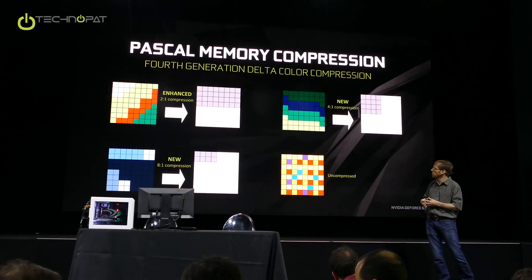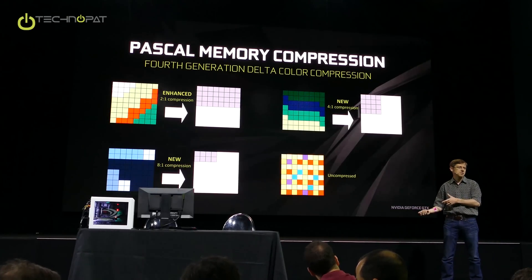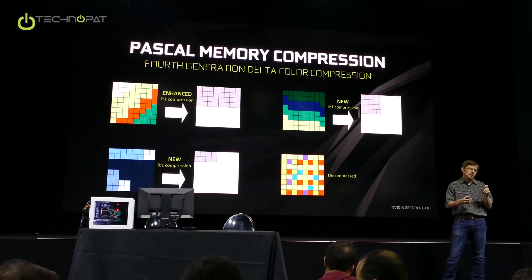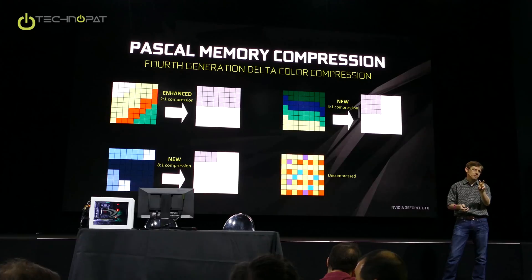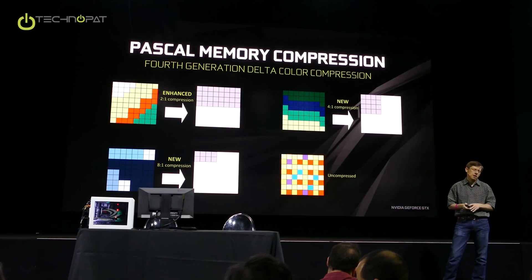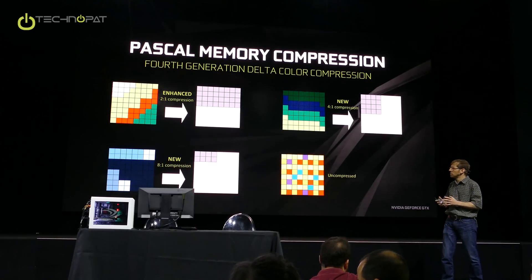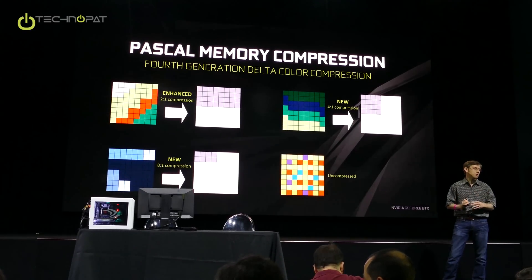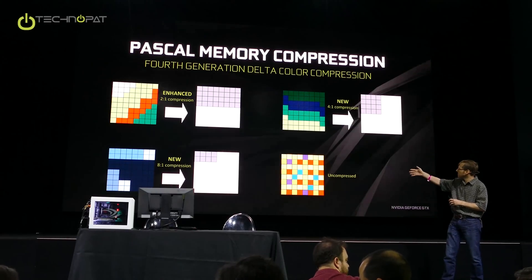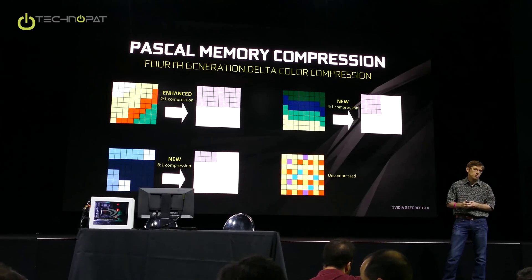Then we have an eight-to-one mode, which combines that four-to-one delta compression with the more classical same-pixel-value compression. If you're running AA with multi-sampling, for example, oftentimes you'll have adjacent pixels that are the same value, while pixels in the neighborhood might be different. Combining those together, we can get an eight-to-one compression ratio. All of this has to be lossless — this is all under the covers, no developer ever sees it, you have to fully preserve all of their bits. If none of these modes work, we fall back to uncompressed.